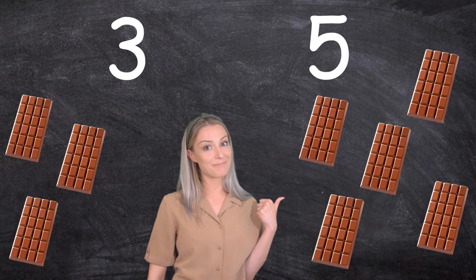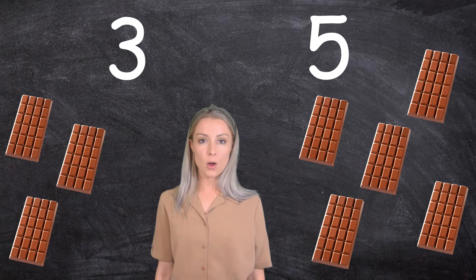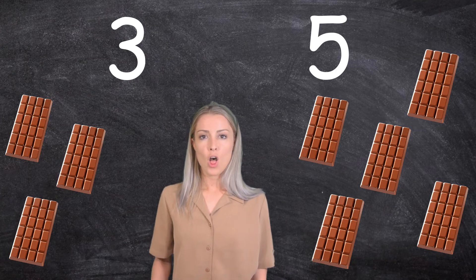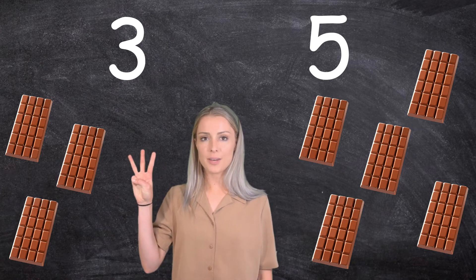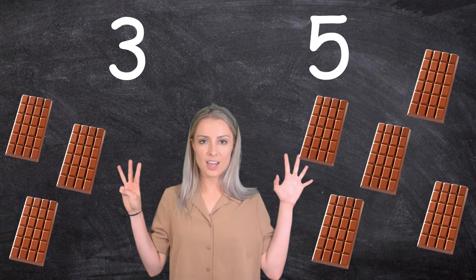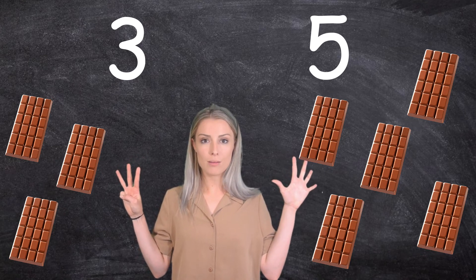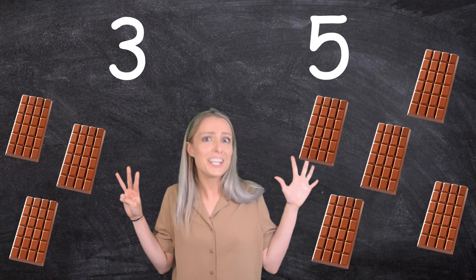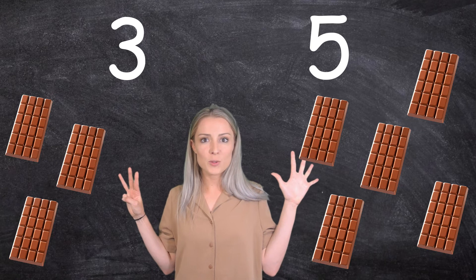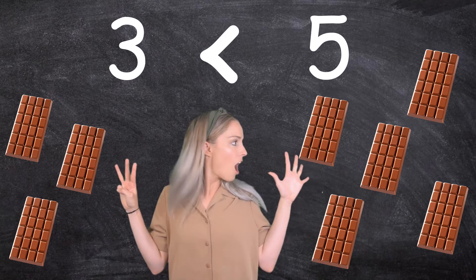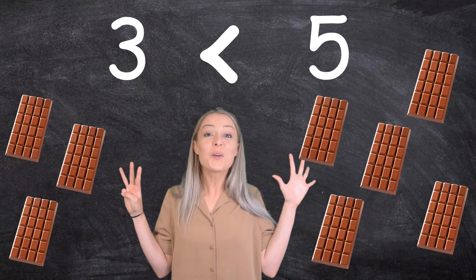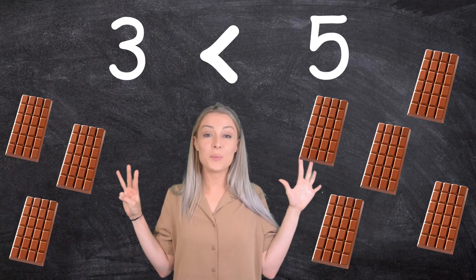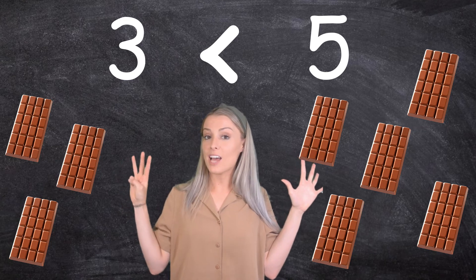And five chocolate bars on this side. Which side is the crocodile going to eat? Three on this side, five on this side. Which is the larger number or the greatest number? It's five, so the crocodile's mouth is going to face towards the five.